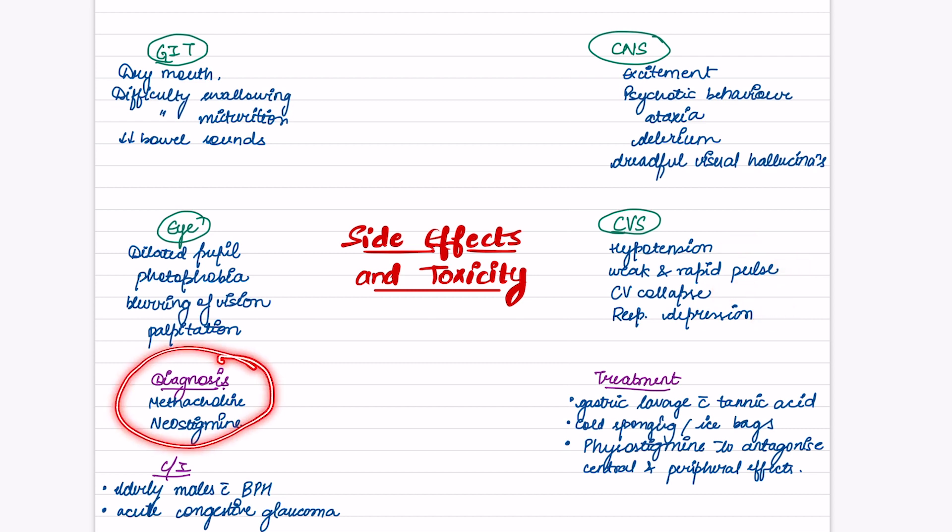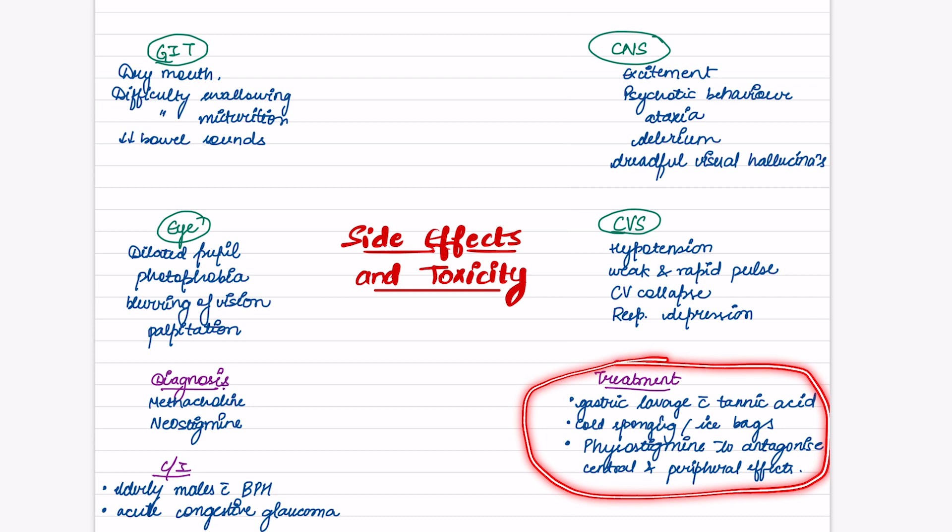Diagnosis in this case, how can we do it? By using methacholine and neostigmine. What are the contraindications? Elderly males with benign prostatic hypertrophy and acute congestive glaucoma. Treatment in case of toxicity of atropine is gastric lavage with tannic acid, cold sponging or ice packs, and physostigmine to antagonize central and peripheral effects.